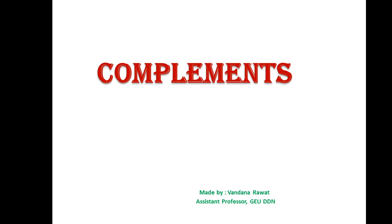In digital electronics there are two types of complements: the first one is R's complement and the next one is R minus 1's complement. R's complement stands for radix complement, and R minus 1's complement is known as the diminished radix complement. I'll tell you in detail how to process these complements.